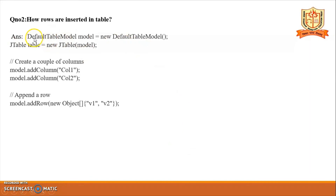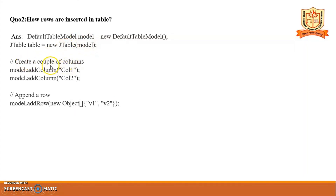How are rows inserted in the table? DefaultTableModel is a subclass. Create the object: DefaultTableModel model = new DefaultTableModel(). Then create a JTable object: JTable table = new JTable(model). You can add columns using model.addColumn() passing the column name. To append rows, use model.addRow() passing a new Object array with the values.